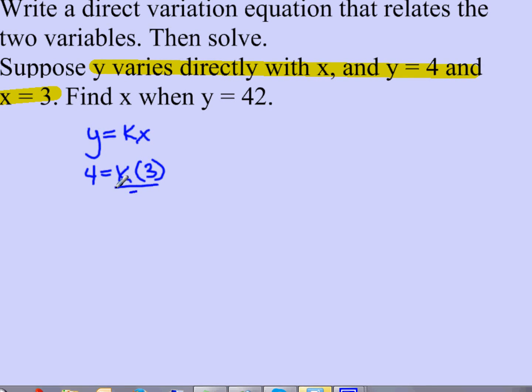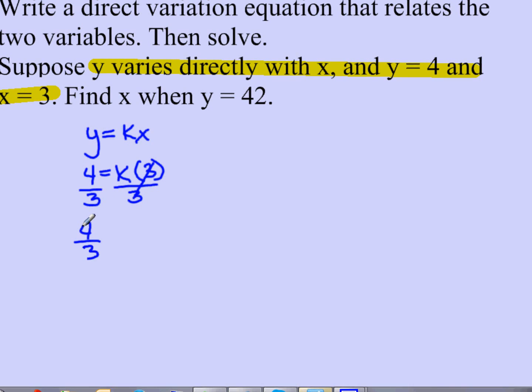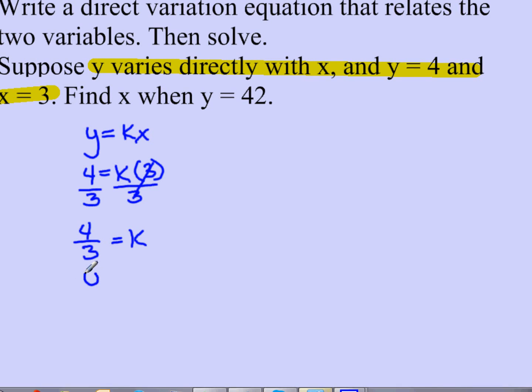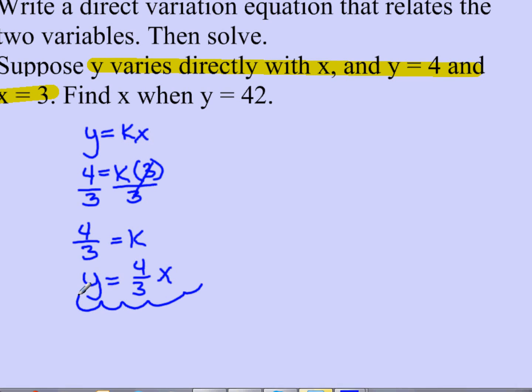Divide both sides by 3. The 3's cancel. 4 thirds cannot be reduced so I leave it as 4 thirds equals k, and therefore my equation is y equals 4 thirds x. So this is my direct variation equation.